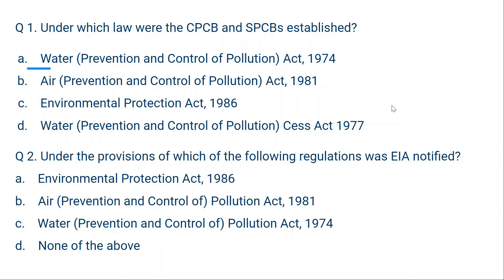Question number 1: Under which law were the CPCB and SPCBs established? Option A: Water Prevention and Control of Pollution Act 1974. Option B: Air Prevention and Control of Pollution Act 1981. Option C: Environmental Protection Act 1986. Option D: Water Prevention and Control of Pollution Act 1977. The Central Pollution Control Board and State Pollution Control Boards were established in 1974, so the correct answer is the Water Prevention and Control of Pollution Act 1974.